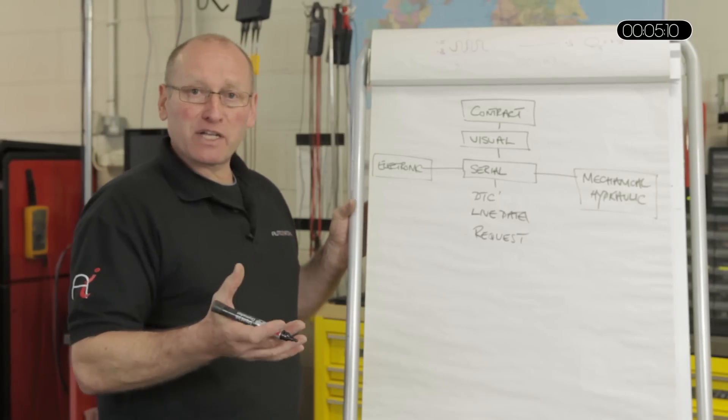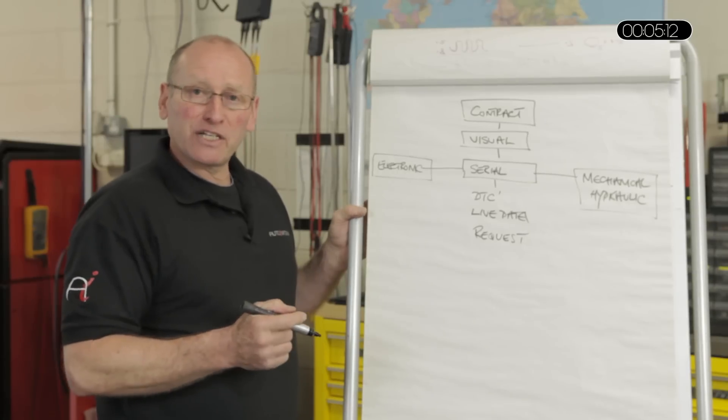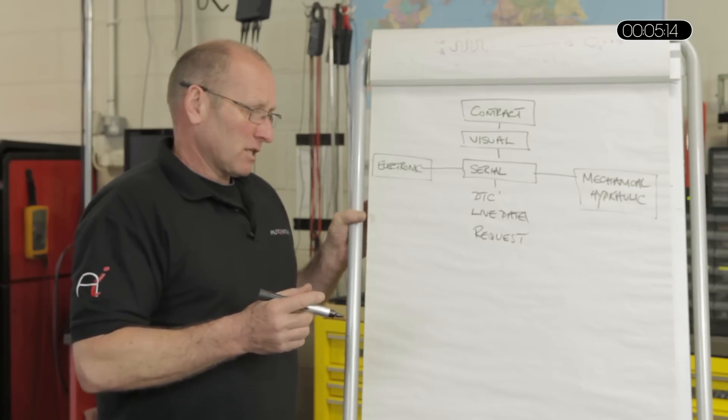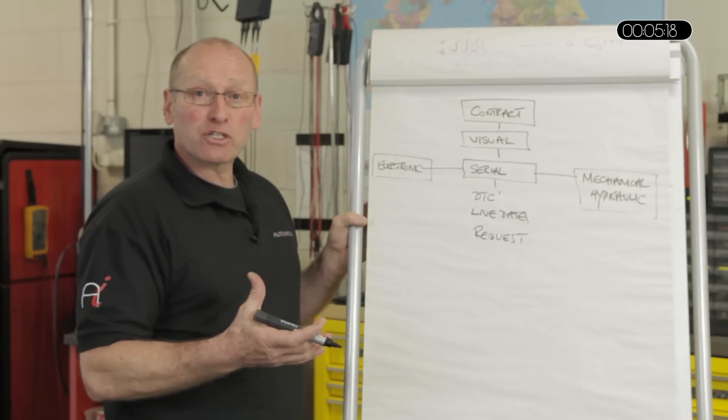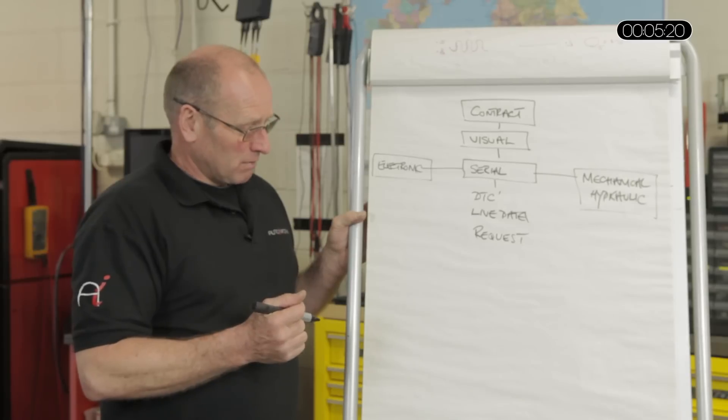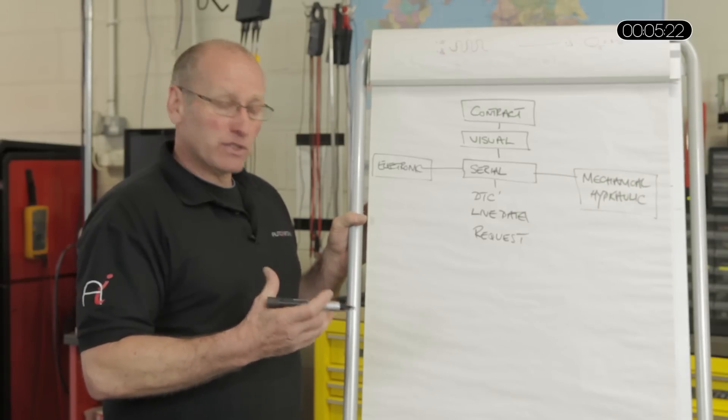It can be a window regulator. What's the request for window regulation? You put your finger on the button and you depress it. It could be a simple switch, voltage. It can be a CAN message or LIN message. But it is still a command, a request to do something.